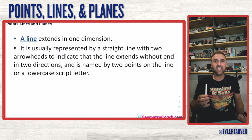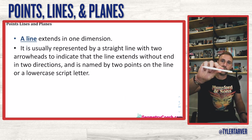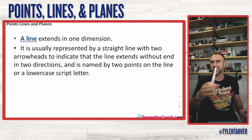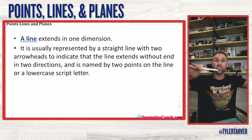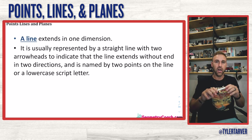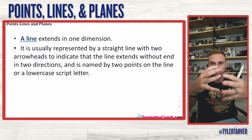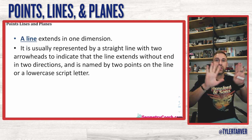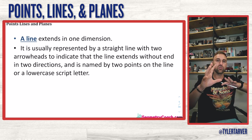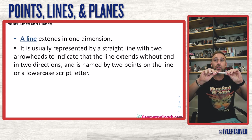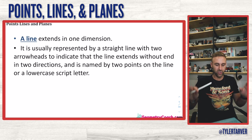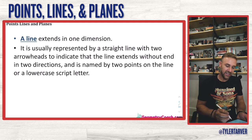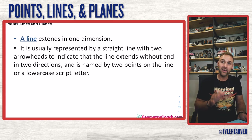A line extends in one dimension, but it goes in two separate directions. We're talking about dimensions — old video games are 2D, like paper on top of paper, while 3D has depth. A line is one-dimensional and is usually represented by a straight line with two arrowheads to indicate that the line extends without end in two directions.